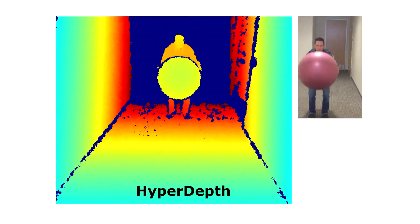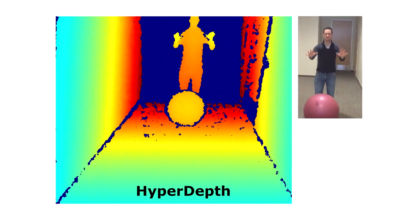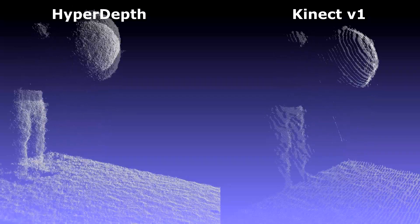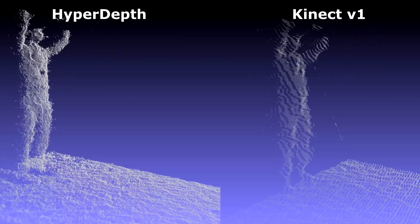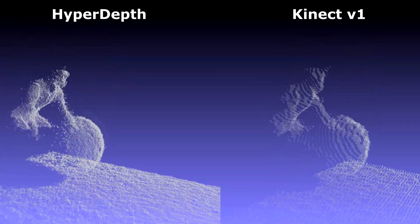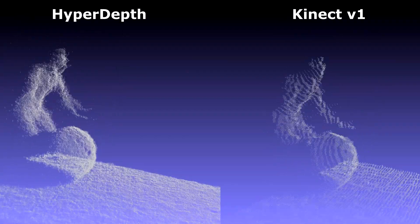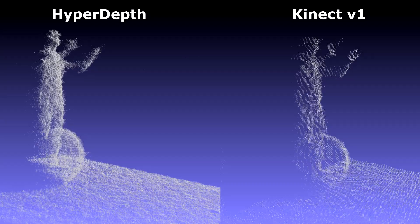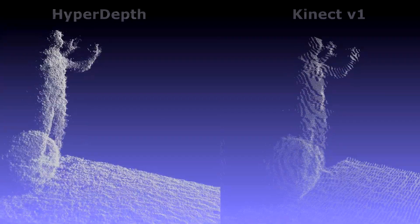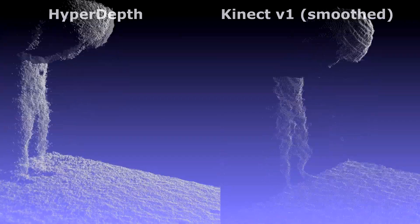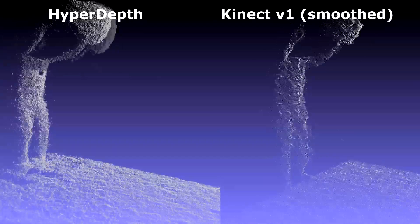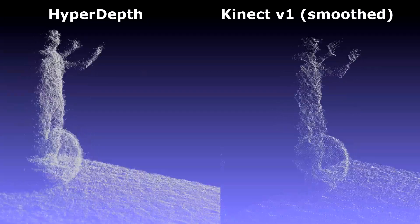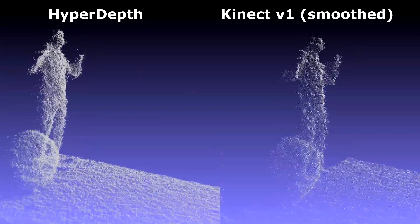We show some more examples of our algorithm in action. Here we compare to the Kinect V1 structured light system and we show improved quantization effects as we can regress higher fidelity depth estimates. Here, even a smooth depth map from Kinect cannot produce similar results as our system.